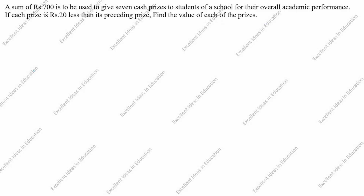What is given in this question? A sum of rupees 700 is to be used to give 7 cash prizes. If each prize is 20 less than its preceding prize, so the first prize we will take as rupees 160. The second is 20 rupees less than its preceding — preceding means before — so rupees 140. Third prize is 120. This goes on; this is the example. Now we will solve this problem.